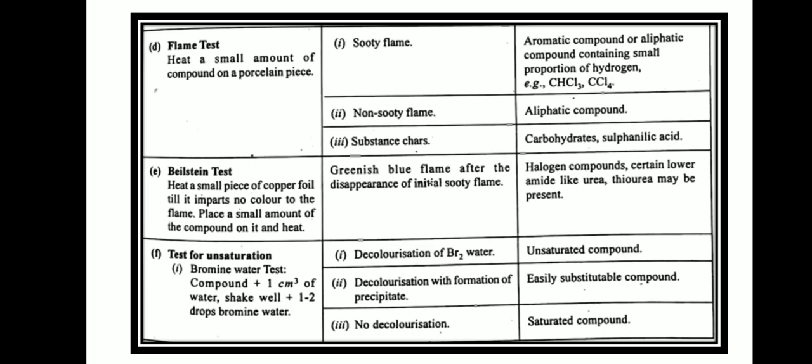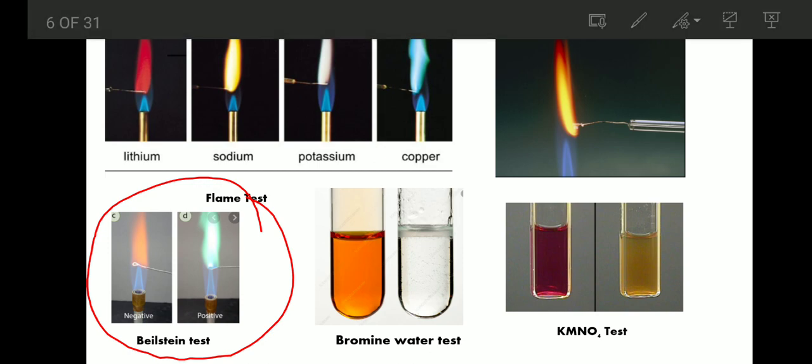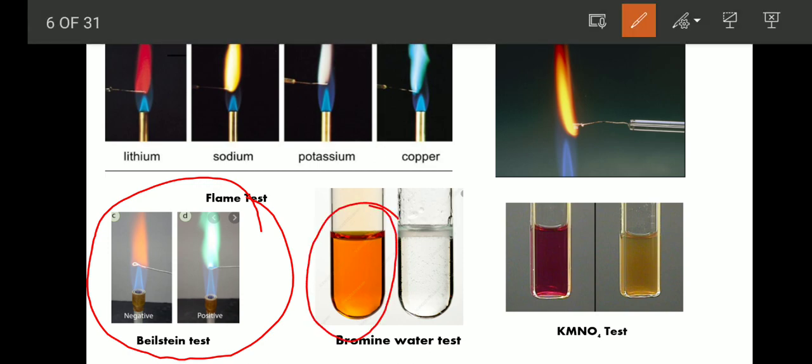The next tests are for unsaturation. There are two tests: first is the bromine water test and second is the KMnO4 test. In the bromine water test, take the compound in a test tube, add 1 ml water, shake it well, and add 1 to 2 drops of bromine water. If the color of the bromine water decolorizes, your compound is unsaturated. If decolorization occurs with formation of a precipitate, an easily substitutable compound is present. If no decolorization occurs, the compound is saturated.